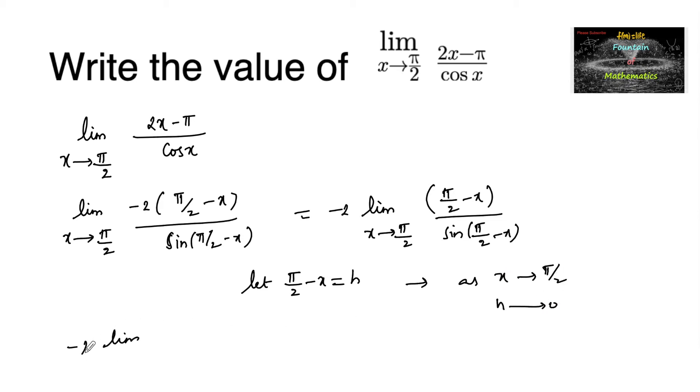So we can change the limit: minus 2 times limit h tends to 0, h upon sin h, or we can also write minus 2 times limit h tends to 0, 1 upon sin h upon h.